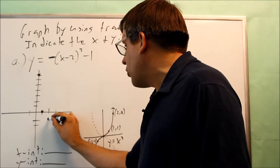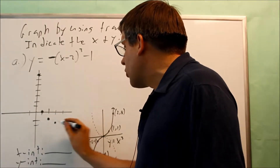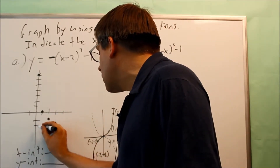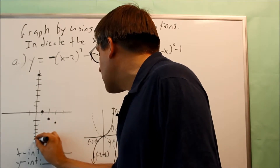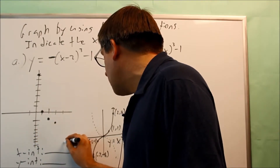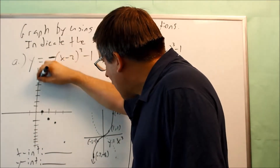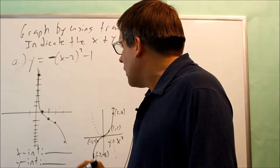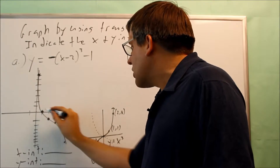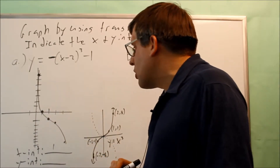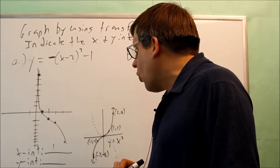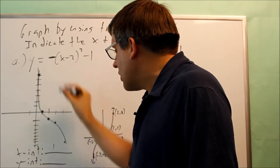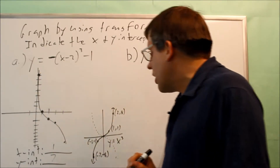From the starting point, I go two places over to the right and then down eight, so my point ends up right here. My graph is going to look like this. My x-intercept crosses at 1 — the x-intercept is 1. And my y-intercept is going to be at 7.